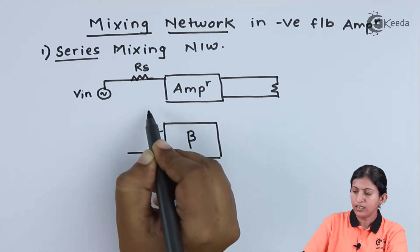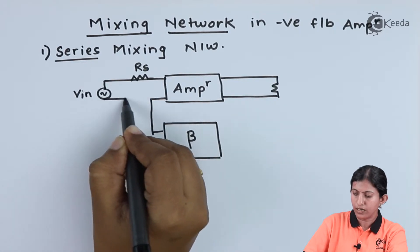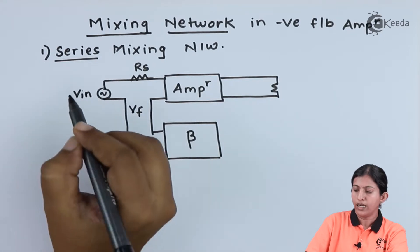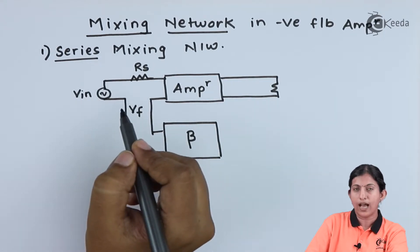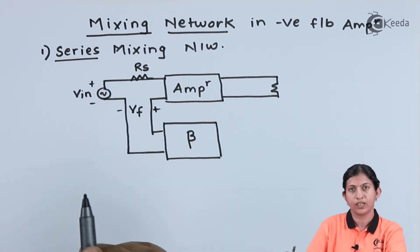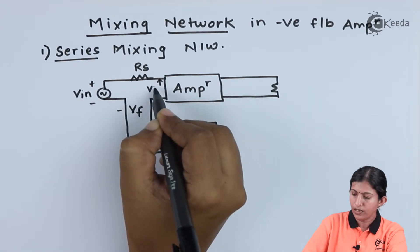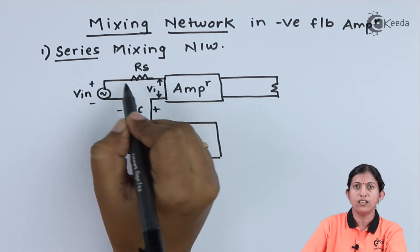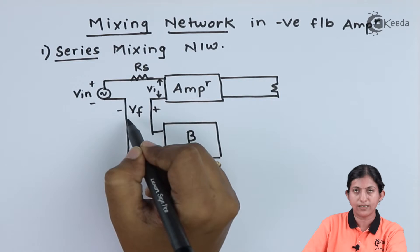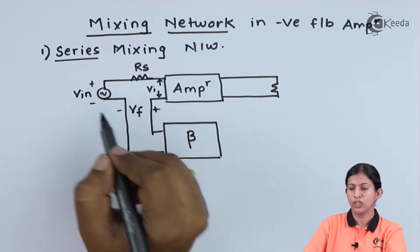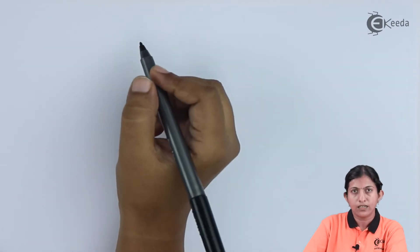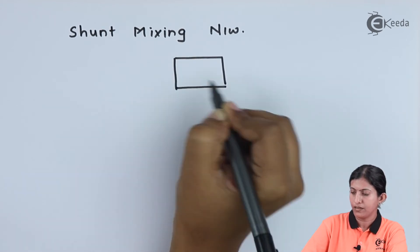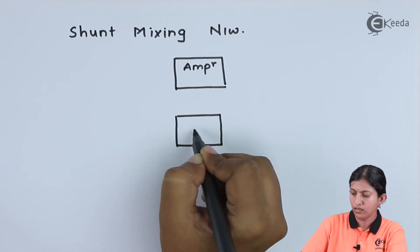In series mixing, the feedback signal is in series opposition with the input signal. We feed the part of the output signal — termed the feedback signal — in series opposition with the input signal. As a result, the net input voltage decreases. The voltage supply is applied in series with resistor Rs, and the feedback signal is applied in series opposition with the input signal.